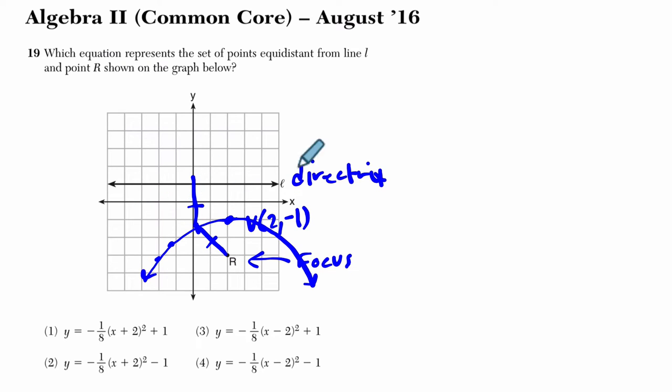The general form of an equation for a vertical parabola is (x - h)² equals 4p times (y - k). H and k are the vertex, so in this case it's (x - 2)², 4p times (y - k).